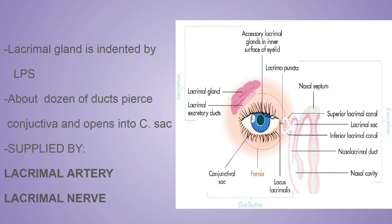Most ducts of the orbital part pass through the palpebral part. The palpebral part is the inner part of the eyelid. So some orbital ducts pierce the palpebral part and finally drain into the conjunctival sac. If the palpebral part is removed, this is almost equivalent to removal of the entire lacrimal gland.